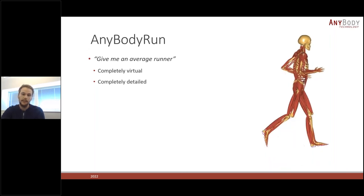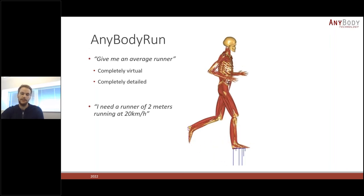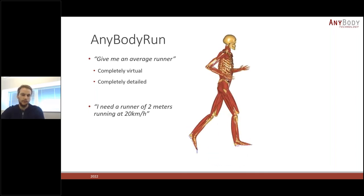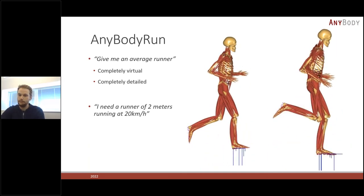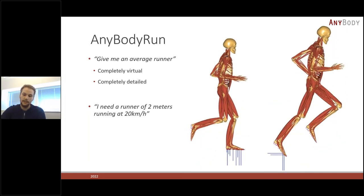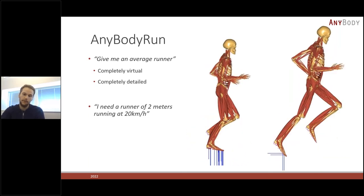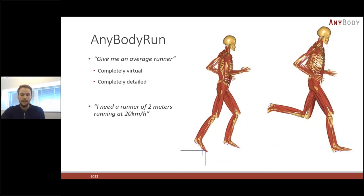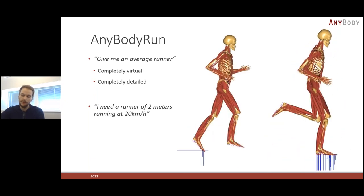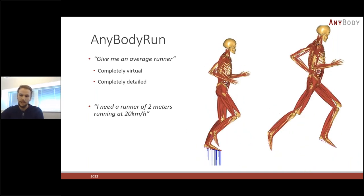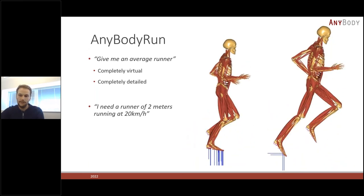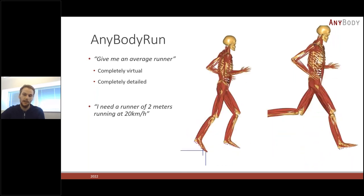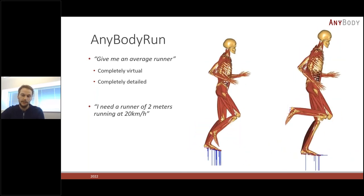We can also specify constraints when generating running styles — for instance, a specific runner of two meters stature running at 20 kilometers per hour — and generate a style that fits those constraints. Customers often have recordings but would love more scenarios. They always have a 'what if' question: what if this person ran faster or slower or differently? We can take our technology and extrapolate from those running patterns to generate the ones they want to look at.